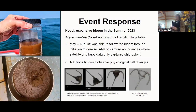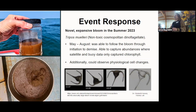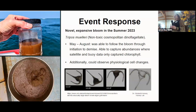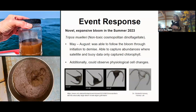It can also be super useful in event response. We used it when we had the novel expansive bloom in the summer of 2023 with Tripos, which is a non-toxic cosmopolitan dinoflagellate. From May to August — the initiation to demise of this big bloom — we were able to follow it and get abundances of the actual number of species that we were potentially seeing. We were also able to pair this with buoy and satellite data that were capturing bulk chlorophyll, but not able to say who was producing what.